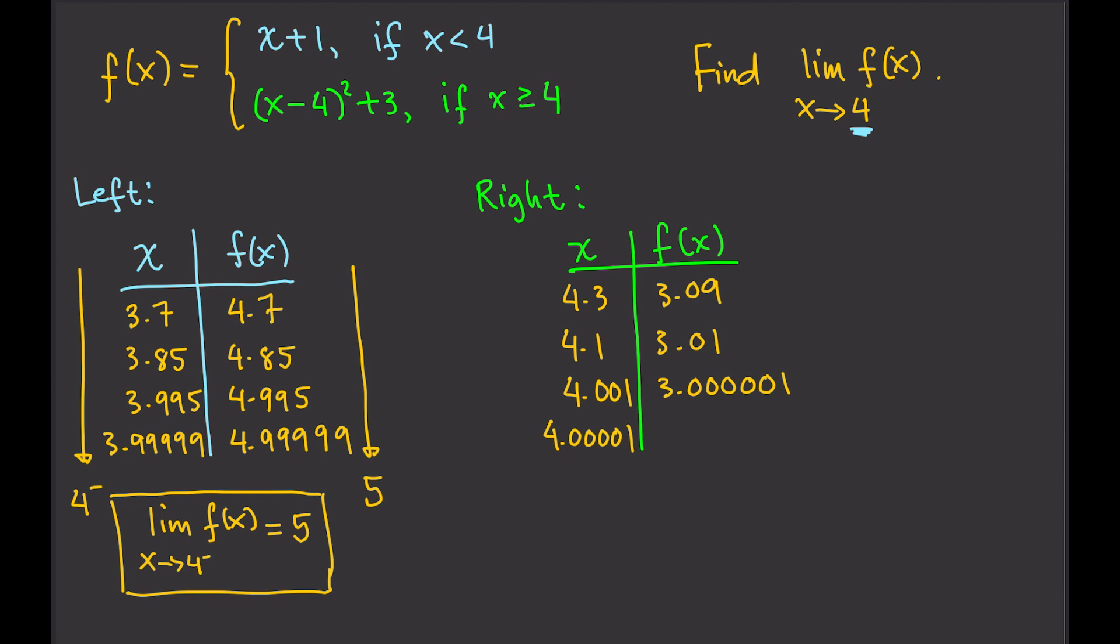And here, we will get 3.0000001. So when x approaches 4 from the right, f of x approaches 3. Therefore, the limit of f of x as x approaches 4 from the right equals 3.